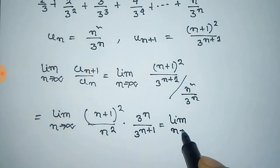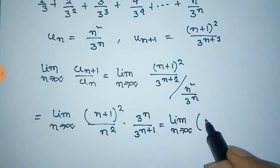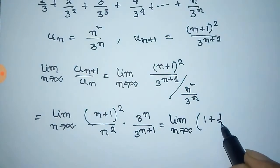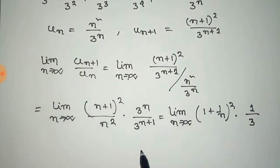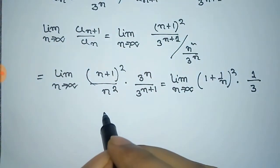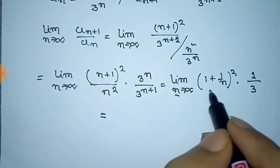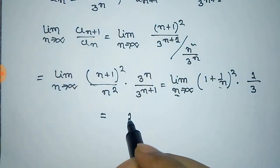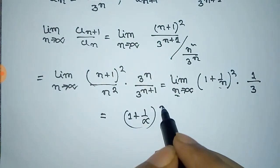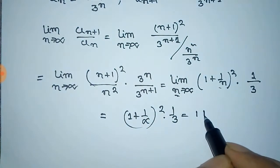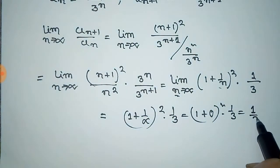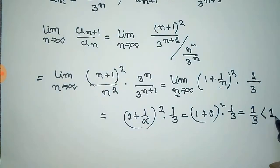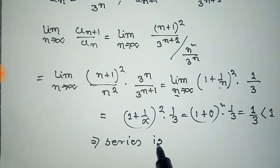Simplifying this expression by dividing through and applying simple algebra, we get: limit as n tends to infinity of (1 + 1/n)² times 1/3. Putting the value of the limit, as n tends to infinity 1/n tends to 0, this gives (1 + 0)² × 1/3 = 1/3. Since 1/3 is less than 1, we can say that the series is convergent.